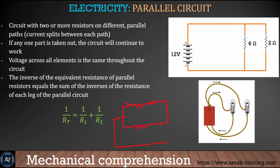A parallel circuit has components connected side by side, like rail lines. Current comes in and splits into two parts. For parallel circuits, the total resistance formula is: 1/RT = 1/R1 + 1/R2. For example, two 5-ohm resistors in parallel: 1/RT = 1/5 + 1/5, giving RT = 2.5 ohms. When resistors are connected in parallel the total resistance decreases; in series it increases.